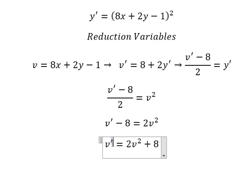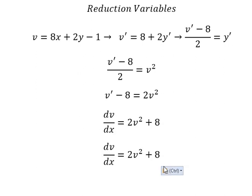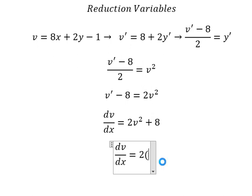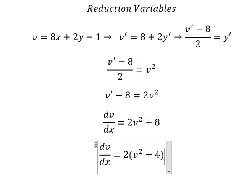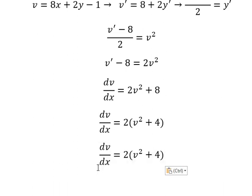This gives us dv/dx. Now we can factor out 2, giving us dv/dx = 2(v^2 + 4). Next, I will move v^2 + 4 to the left and dx to the right to separate variables.